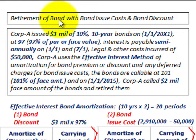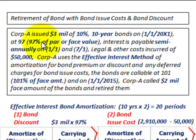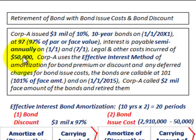We're going to look at a retirement or redemption of a bond that has issue costs and was issued at a discount. So we'll have amortization costs to deal with for both the issue costs and the discount. For example, Corporation A issued $3 million of a 10% bond, a 10-year bond on 1-1-20X1 at 97% of par value, receiving 97% of the $3 million face value in cash. Interest is payable semi-annually on 1-1 and 7-1. Legal and other costs incurred were $50,000.